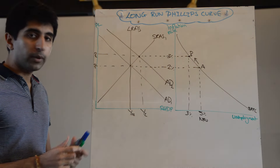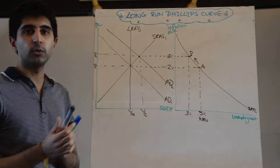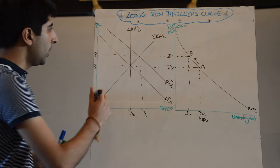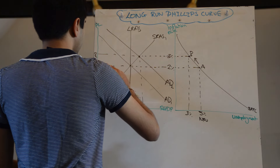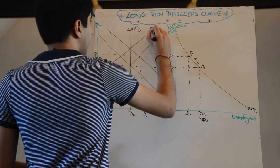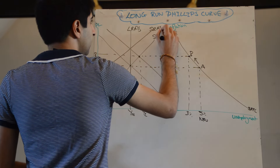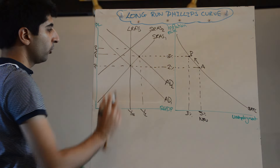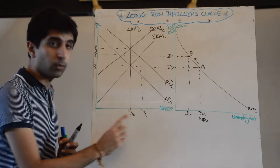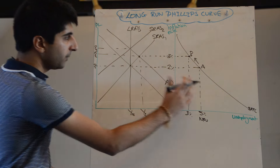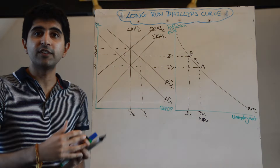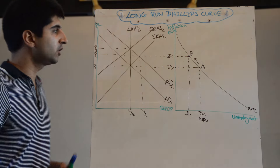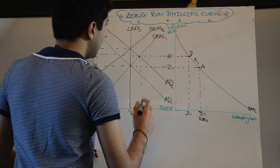Going back to our classical model — what would happen here? Eventually workers will change their wage expectations, revise them upwards and demand higher wages, which will increase costs of production for firms and shift SRAS to the left from SRAS1 to SRAS2, leading to a rise in cost-push inflation and taking the economy back to Y full employment.